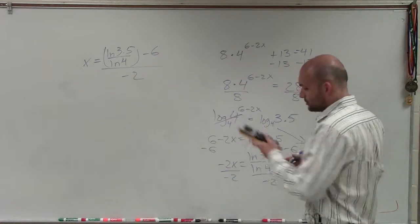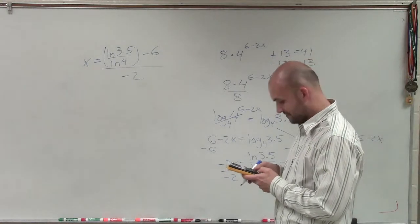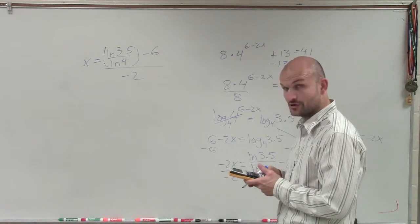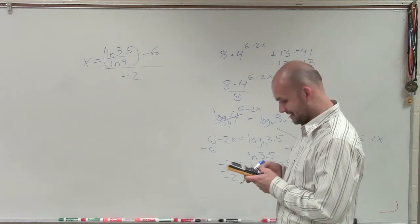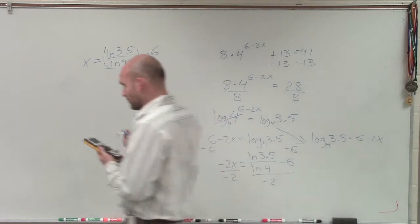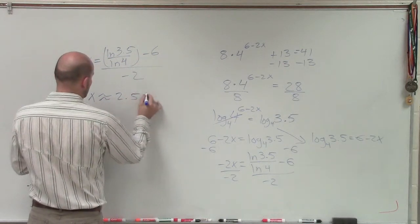So let's just go and do the parentheses first. So I have ln of 3.5 divided by ln of 4. Make sure you apply your parentheses. Subtract that from 6, and then divide by negative 2. So therefore, x is approximately 2.55.